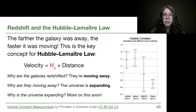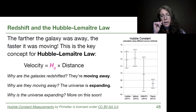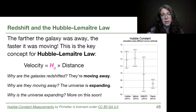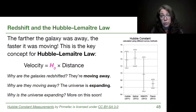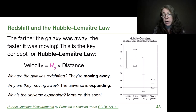The Hubble-Lemaître Law is written as: the radial velocity — the towards-or-away direction — is equal to the Hubble constant H₀ times the distance to that galaxy. If we know H₀, that's incredibly important. We can get the velocity from direct observations of Doppler shift, and that allows us to determine the distance.